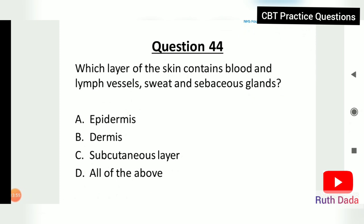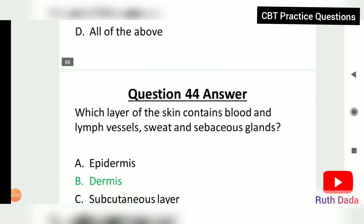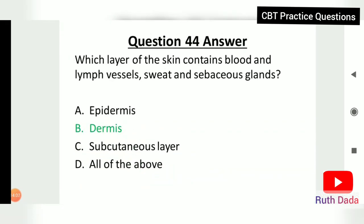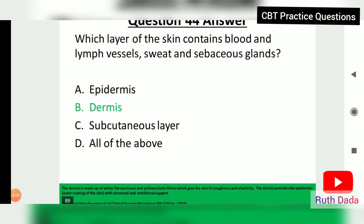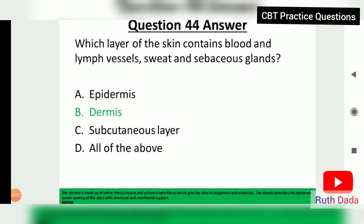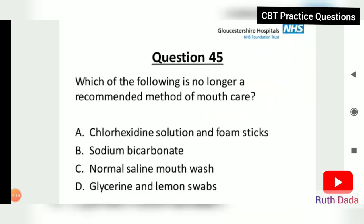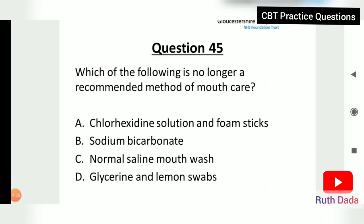Question 44: Which layer of the skin contains blood and lymph vessels, sweat and sebaceous glands? The dermis. The dermis is made up of white fibrous tissue and yellow elastic fibers, which give the skin its toughness and elasticity, and provides the epidermis with structural and nutritional support.